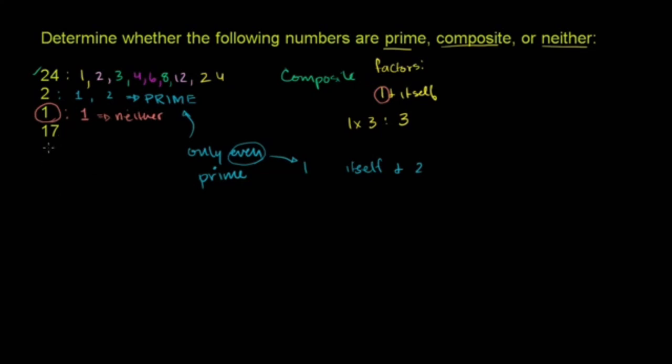And then finally, we get to 17. 17 is divisible by 1 and 17. It's not divisible by 2, not divisible by 3, 4, 5, 6, 7, 8, 9, 10, 11, 12, 13, 14, 15, or 16. So it has exactly 2 factors: 1 and itself. So 17 is, once again, 17 is prime.